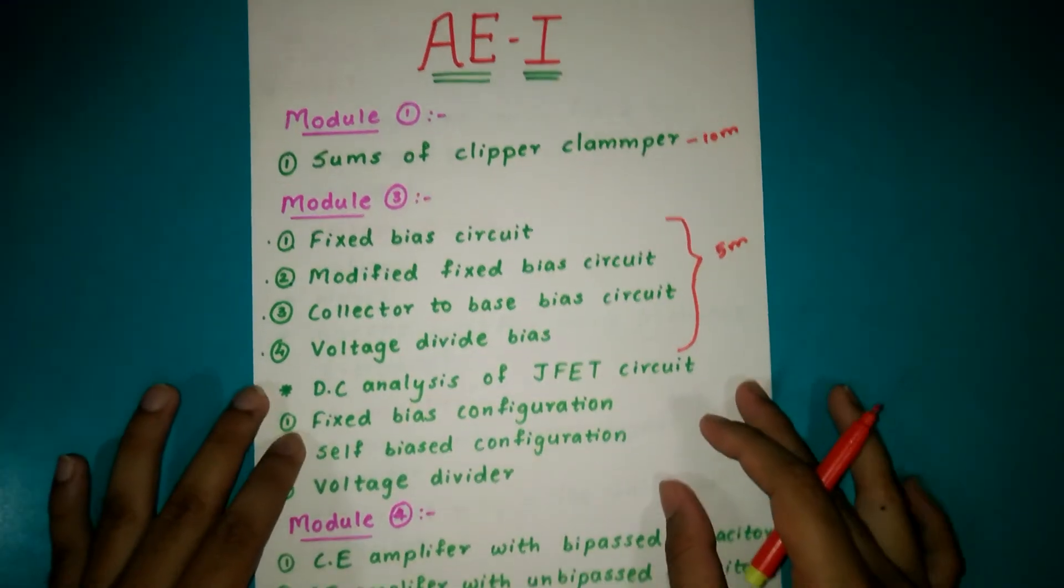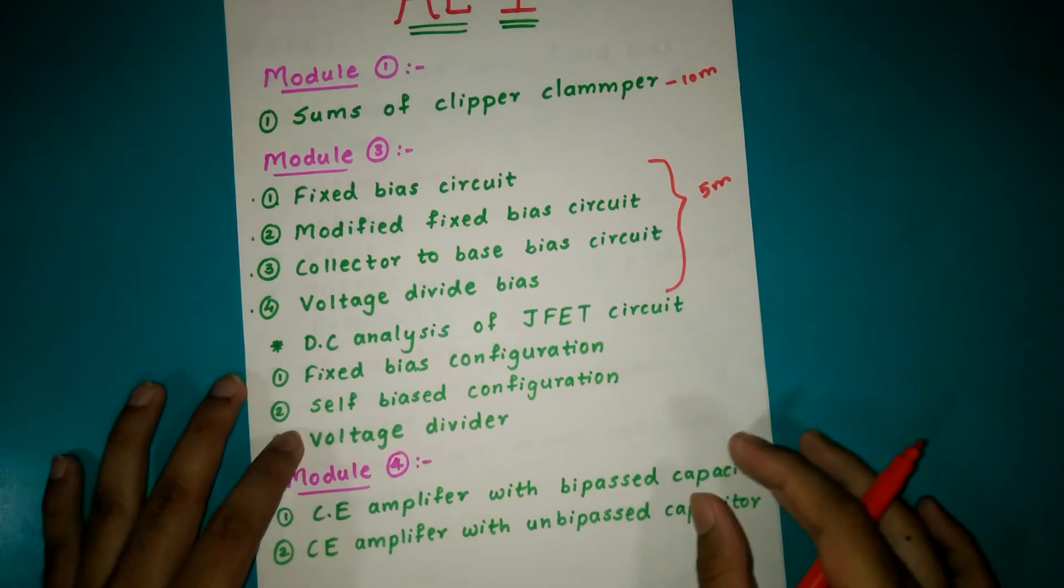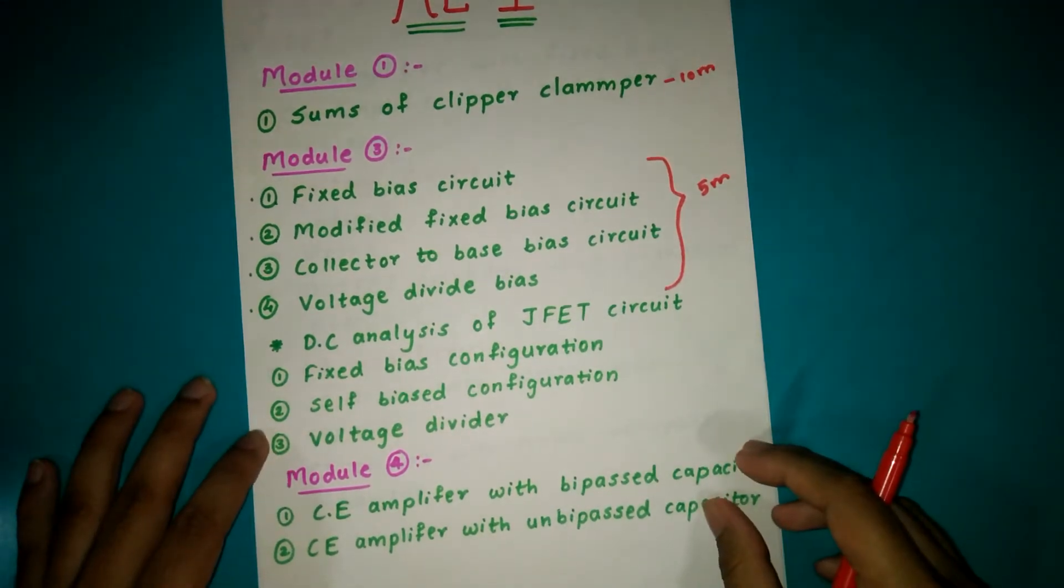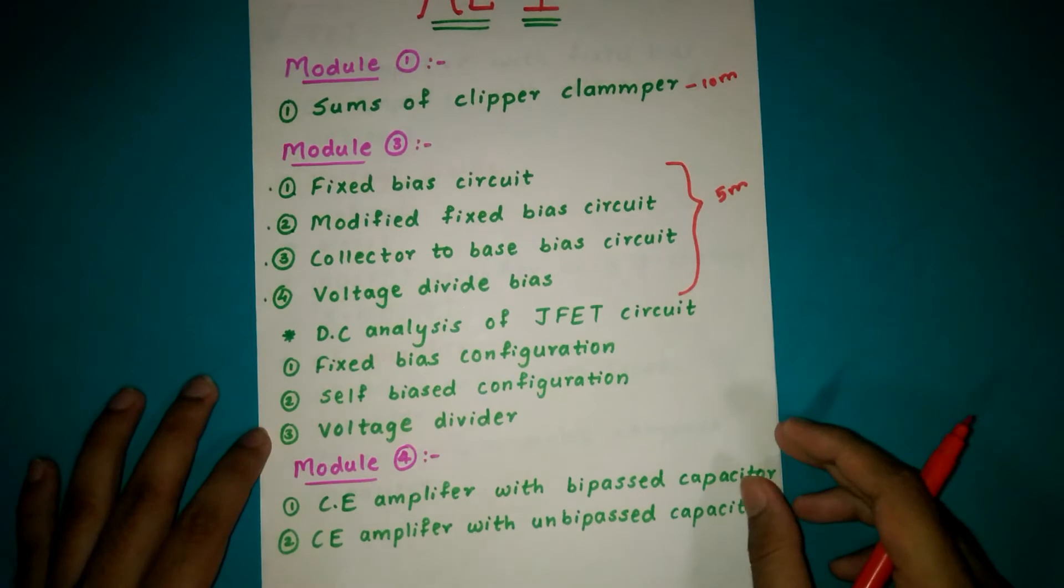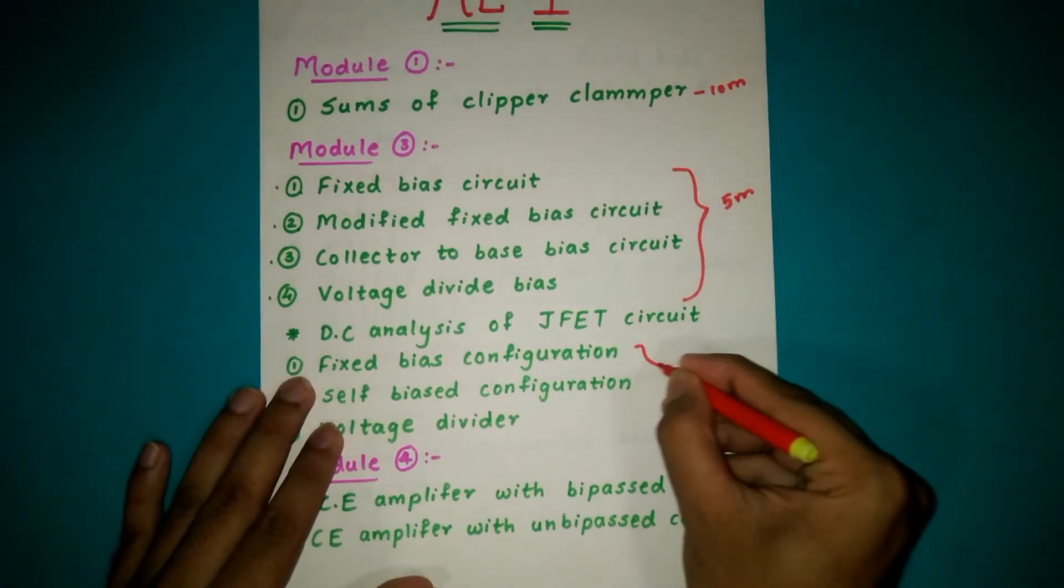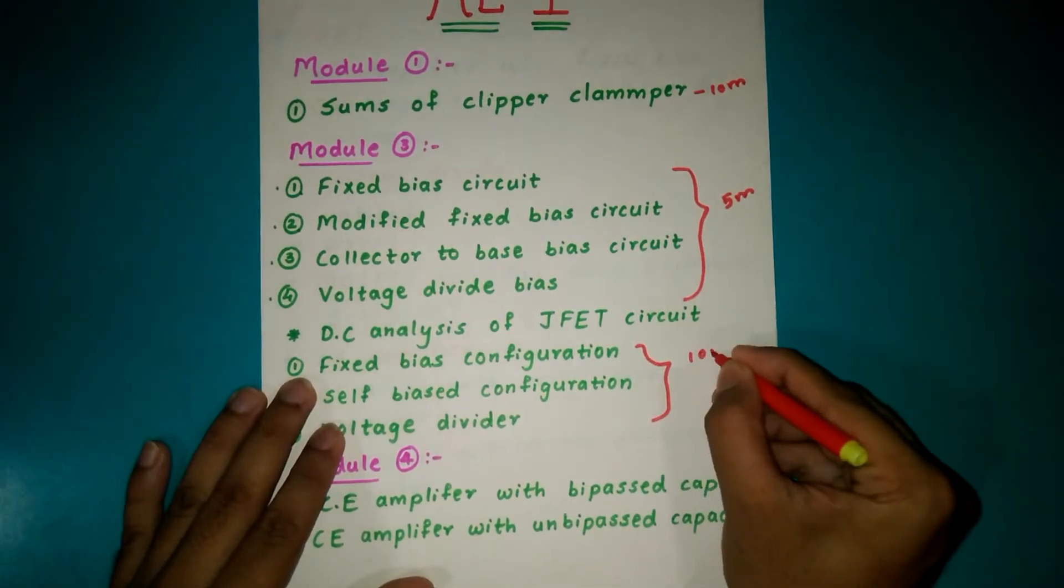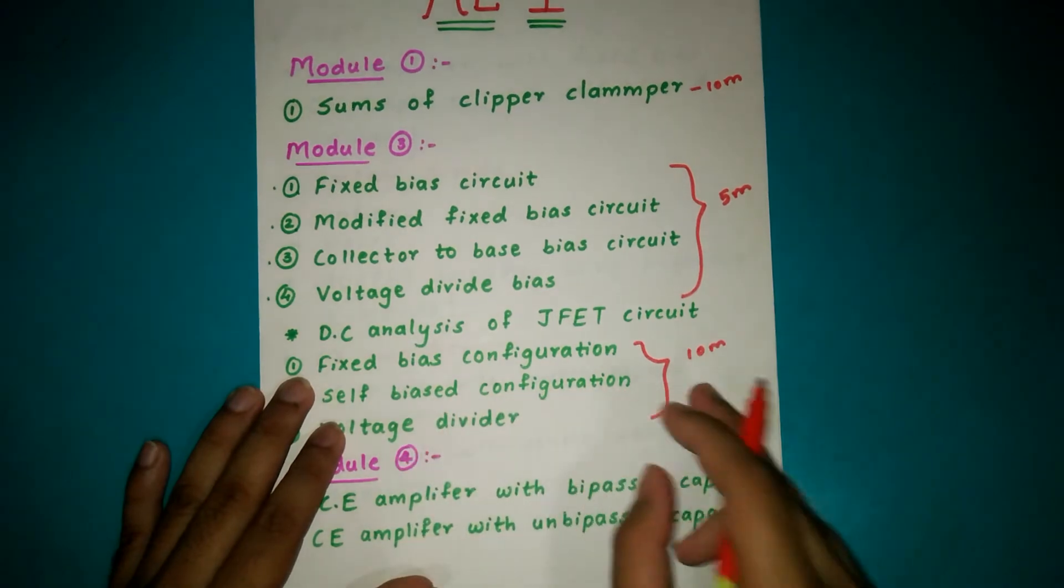DC analysis of JFET circuit - in that, fixed bias configuration, self-biased configuration, voltage divider. From this you will get one question for 10 marks.